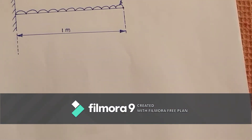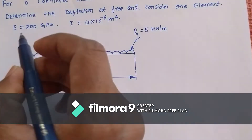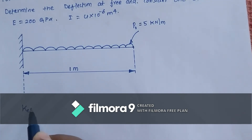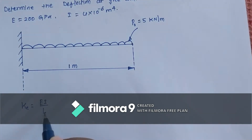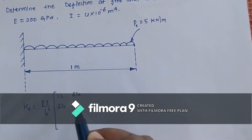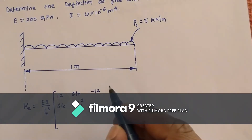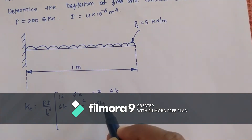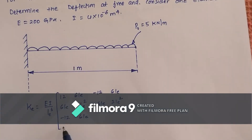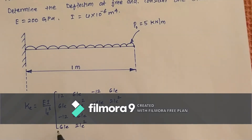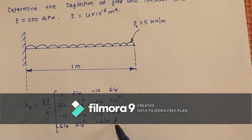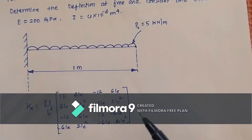We know that for this element we can write the stiffness matrix. The general stiffness matrix is: KE = (EI / LE³) × [12, 6LE, −12, 6LE; 6LE, 4LE², −6LE, 2LE²; −12, −6LE, 12, −6LE; 6LE, 2LE², −6LE, 4LE²]. This is the stiffness matrix for a beam element.